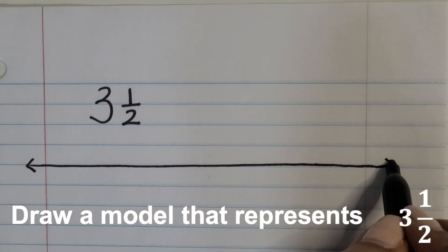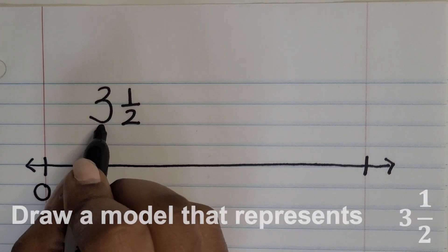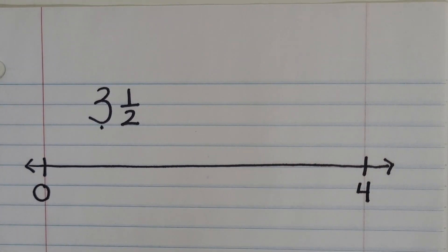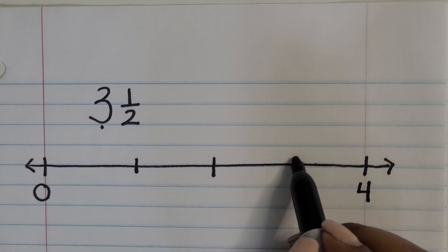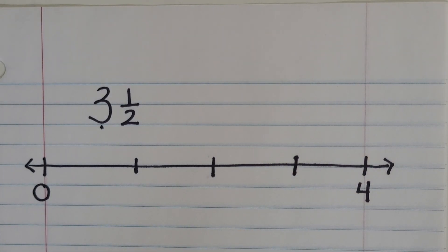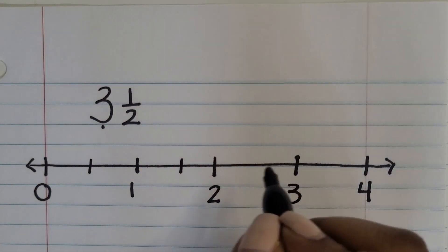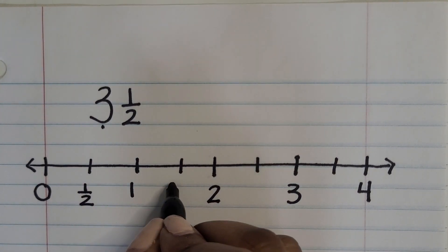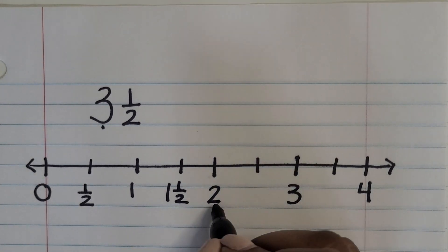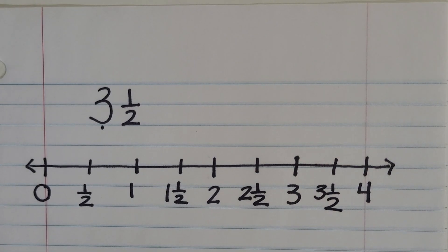In our final example, we'll represent three and one half using a number line. Our first endpoint is zero and our last endpoint is four because we have a number greater than three wholes. Partition the number line in half, then partition each half in half — those tick marks represent whole numbers: one, two, three, and four. Because our fraction shows halves, partition each whole in half. Starting at zero, count out each half: one half, one whole, one and one half, two wholes, two and one half, three wholes, and then three and one half is where we need to get to.